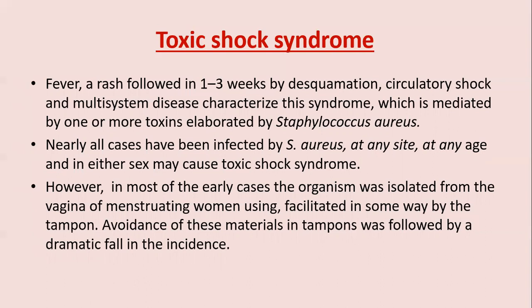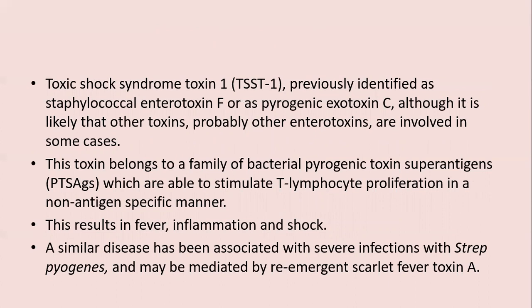However, most early cases had organisms isolated from the vagina of menstruating women using tampons; avoidance of homemade tampons was followed by a dramatic fall in incidence. Toxic shock syndrome toxin TSST-1, previously identified as staphylococcal enterotoxin F or pyrogenic exotoxin C, is the primary toxin, although other enterotoxins are likely involved. The toxin belongs to the family of bacterial pyrogenic toxin superantigens, which stimulate T-lymphocyte proliferation in a non-antigen-specific manner, resulting in fever, inflammation, and shock. A similar disease is associated with severe infection with Strep. pyogenes, mediated by re-emergent scarlet fever toxin A.